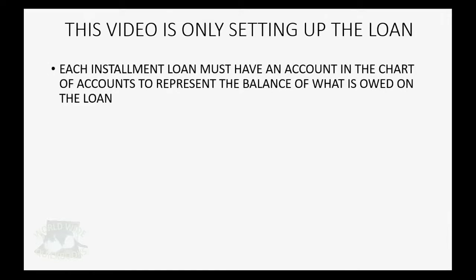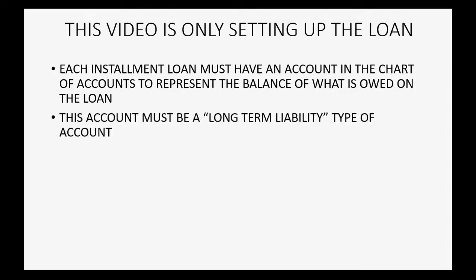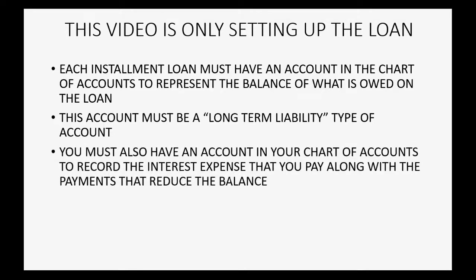Now, this video is only setting up for the loan. Each installment loan must have an account in the chart of accounts to represent the balance of what is owed on the loan, and the account must be a long-term liability type of account. You must also have an account in your chart of accounts to record the interest expense that you pay along with payments to reduce the balance.